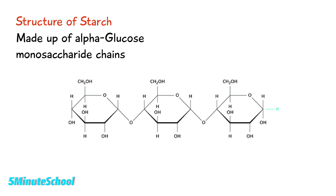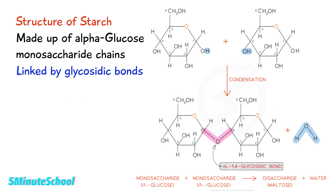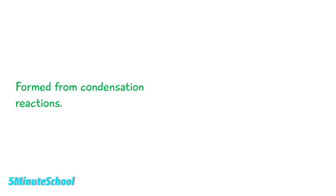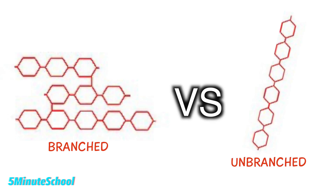The structure of starch is that it's made up of alpha-glucose monosaccharide chains which are linked together by glycosidic bonds, which are formed from condensation reactions. The chains can be branched or unbranched. Unbranched chains can be wound into a tight coil which makes the molecule very compact.